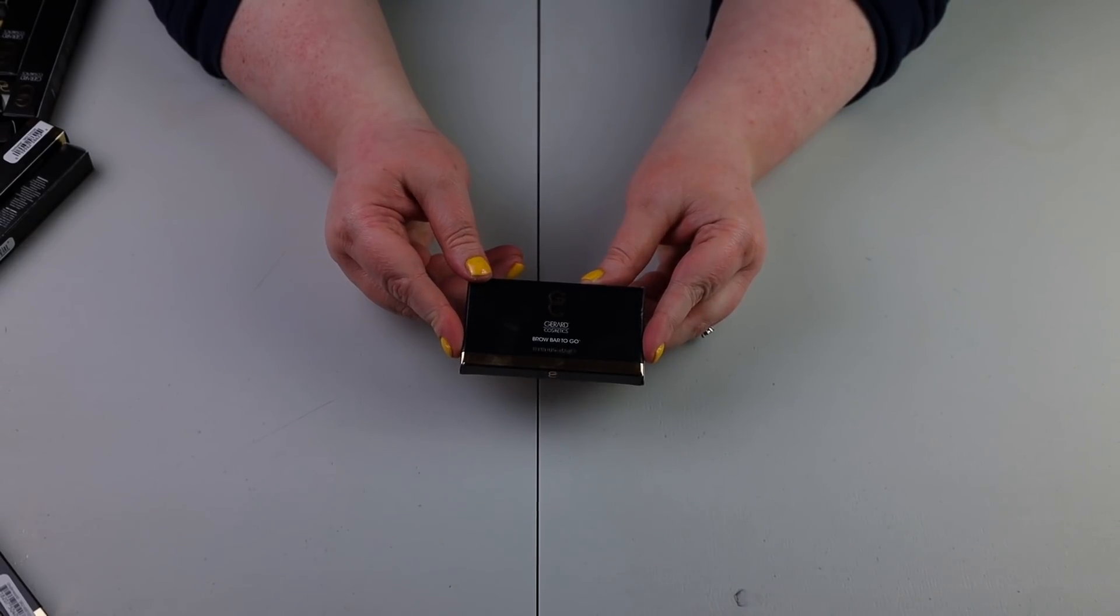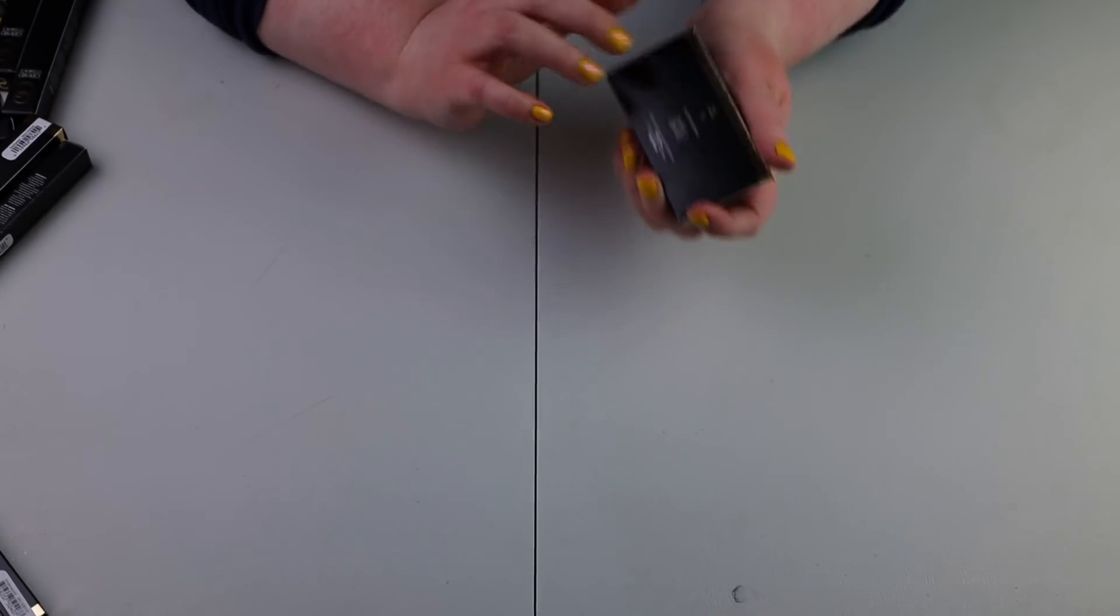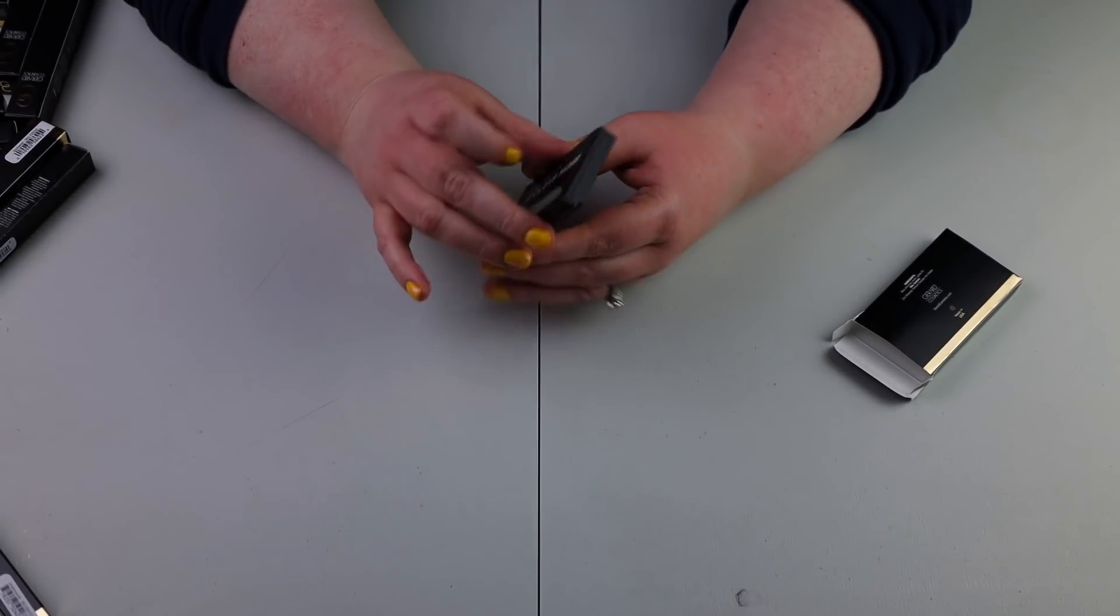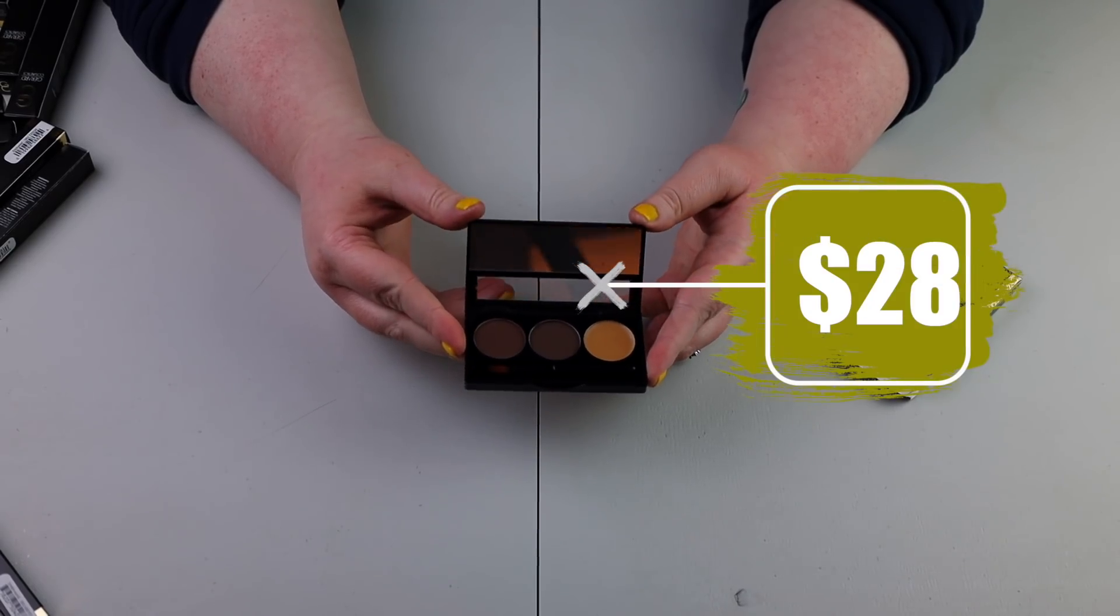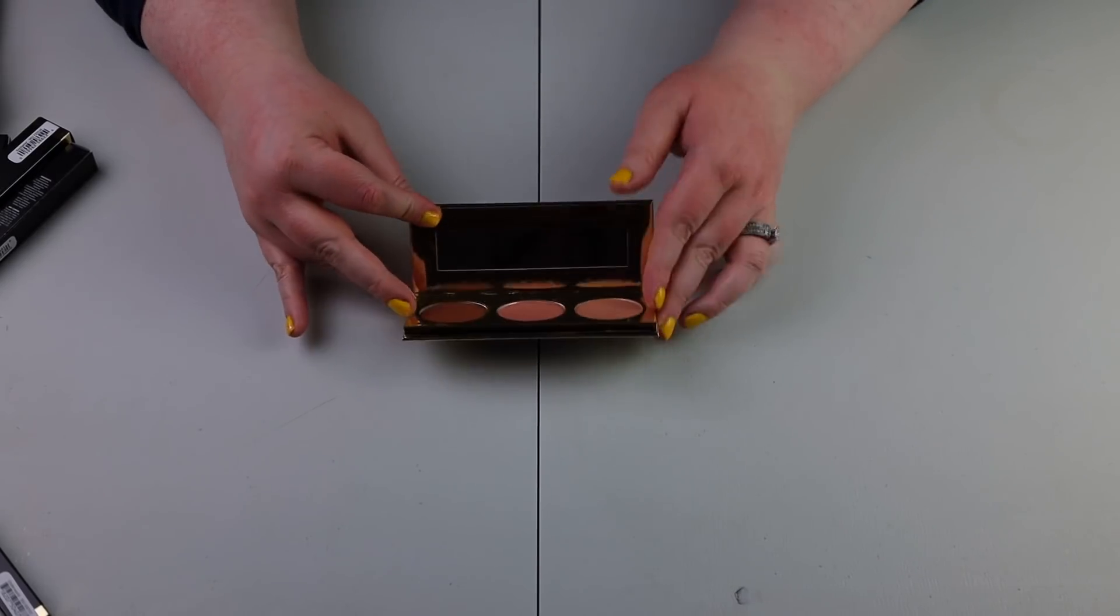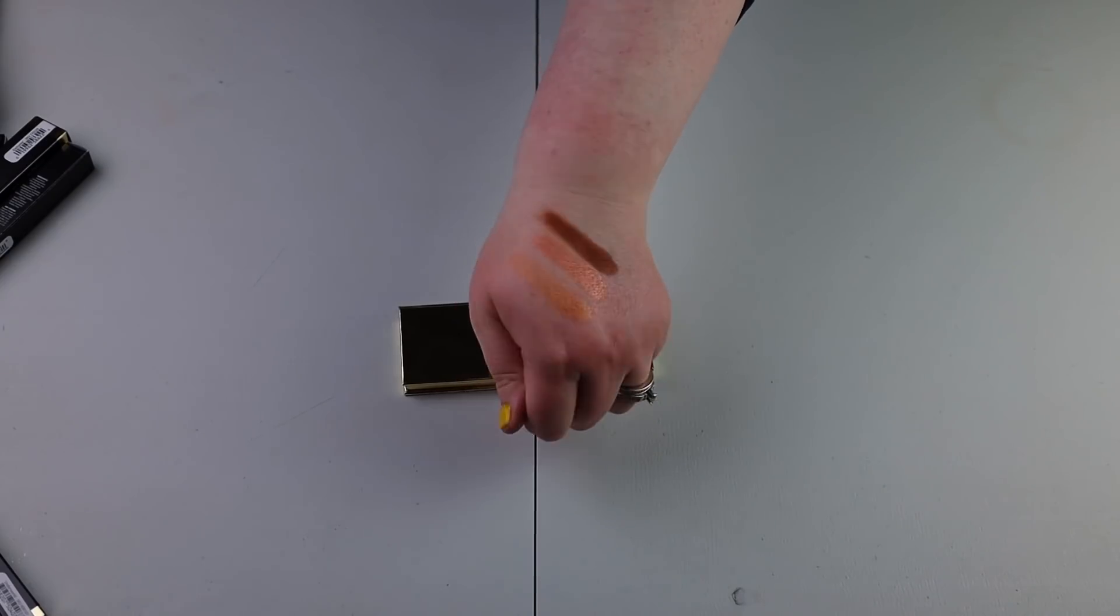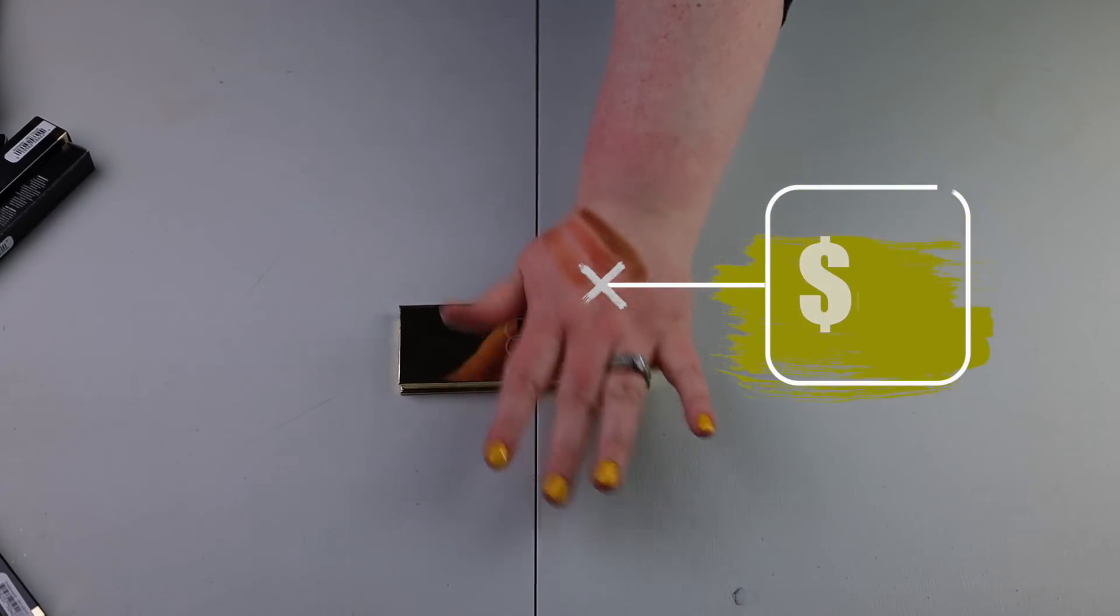We have the brow bar to go. I think this is going to be a little bit too dark for me. This is in the shade medium to ebony. Looks like a nice little brow kit. Definitely way too dark for me. So I'm going to pass this along. We have the star palette. Look at these beautiful shades. Very beautiful. Although I will say they look like they are definitely going to be way too deep for me to use.